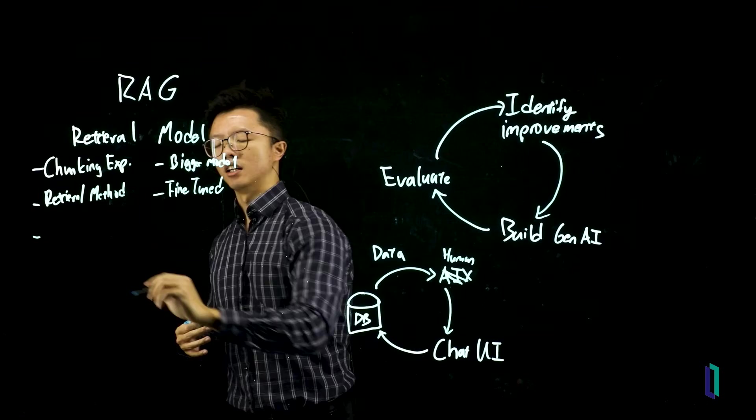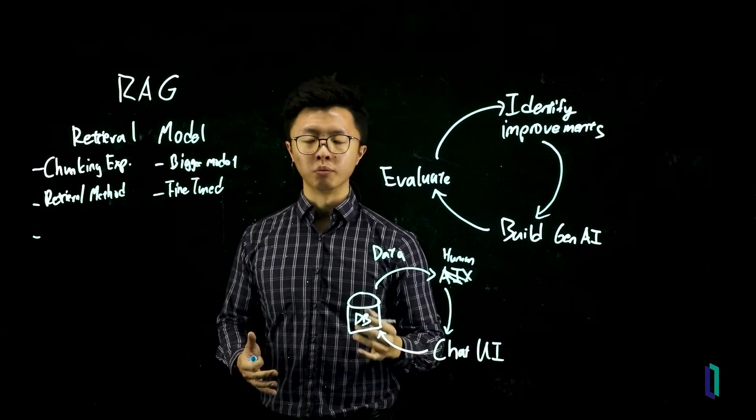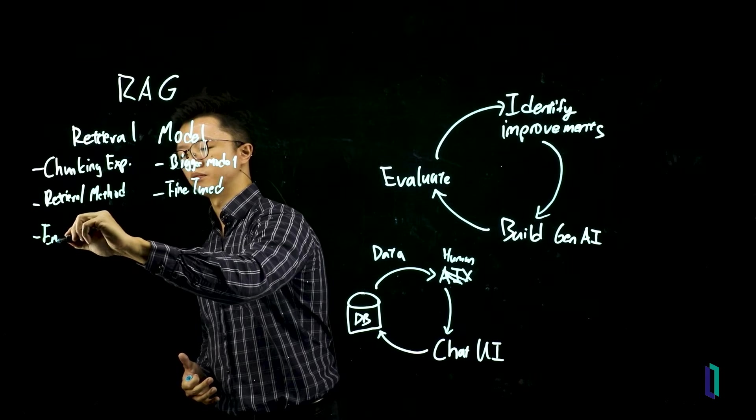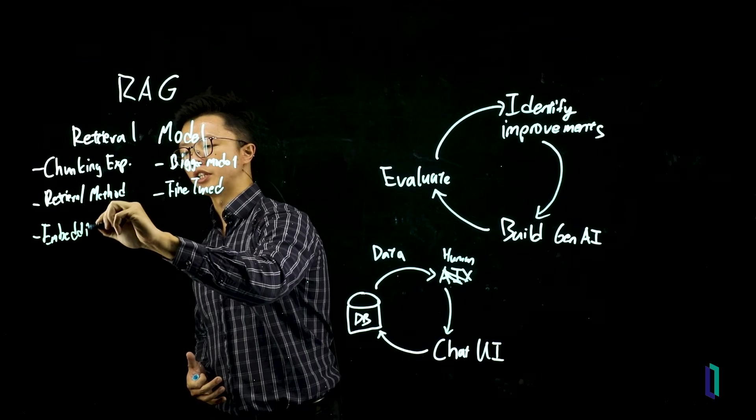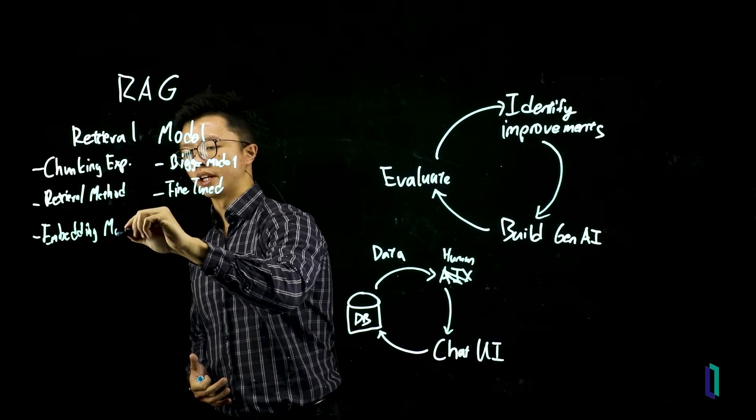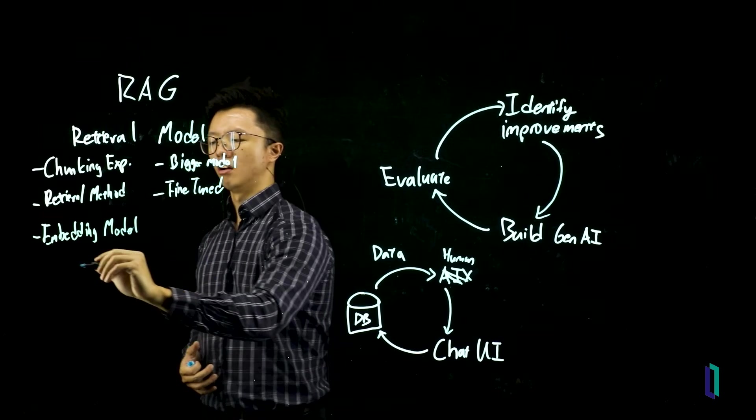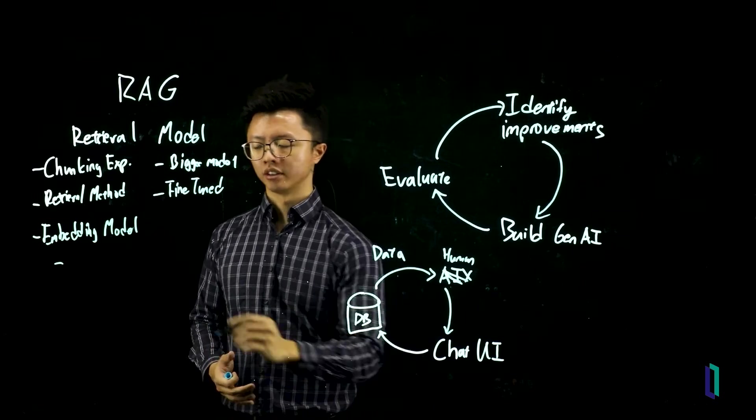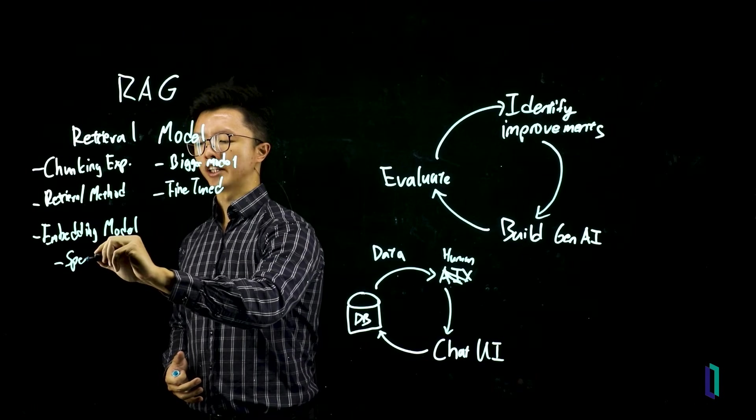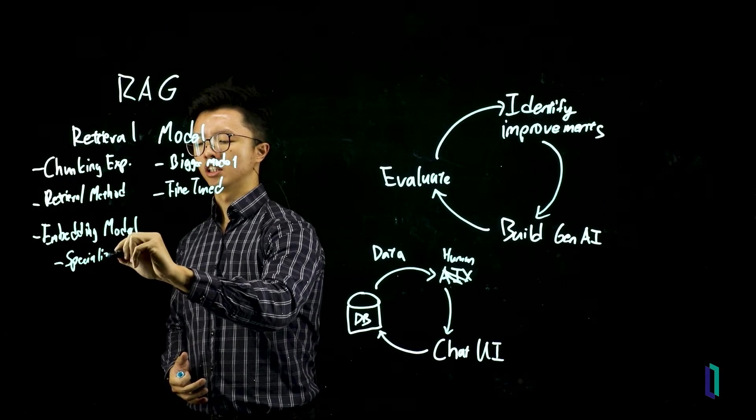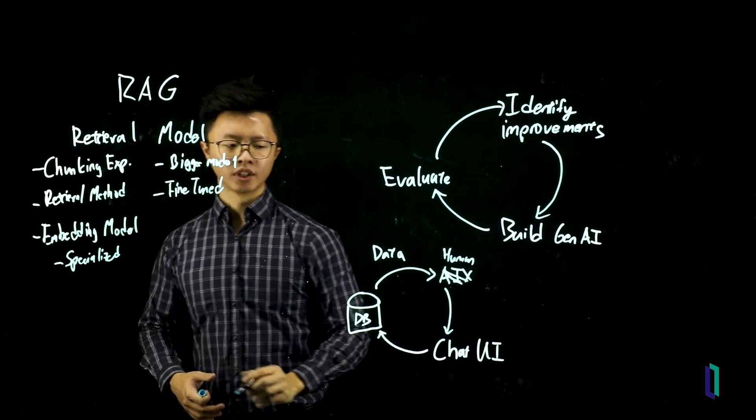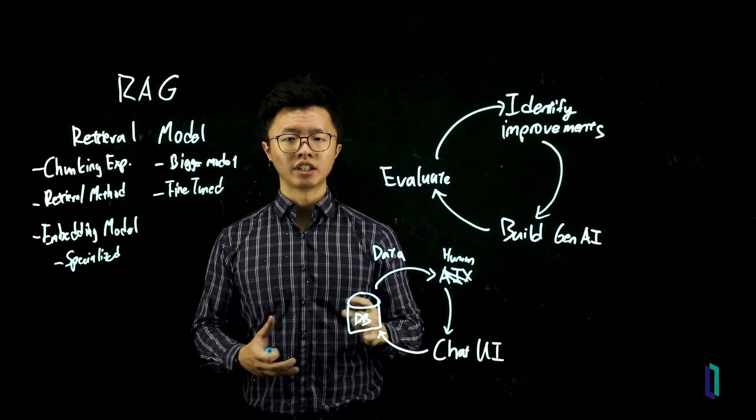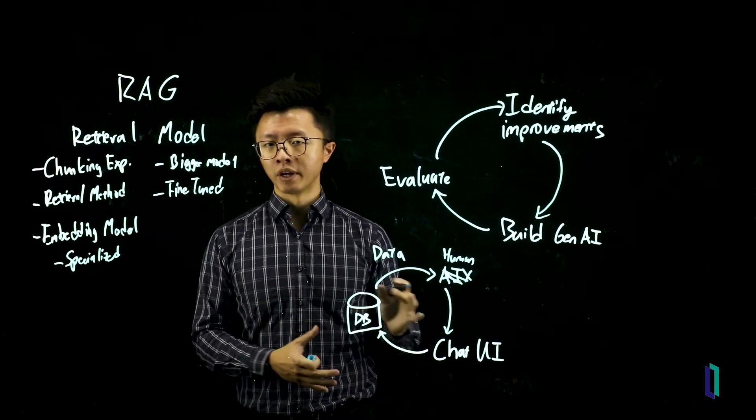One way to tackle relevance of data would be to improve your embedding model that you used. So you can use a larger embedding model. Or you can use an embedding model that's more specialized to your domain. These are often fine-tuned to that specific domain. For example, there are embedding models that can better differentiate different types of medical-related information.